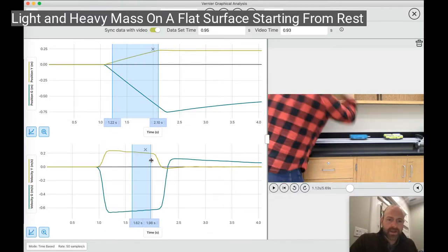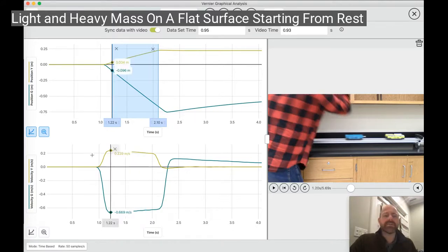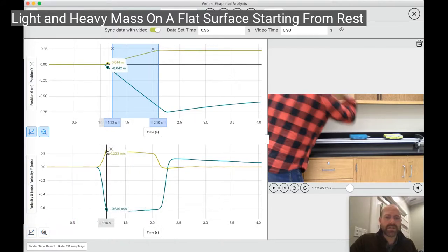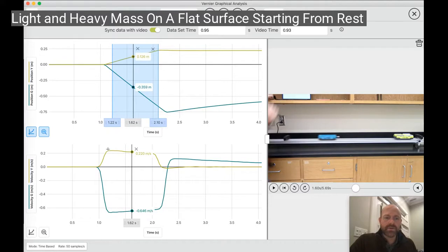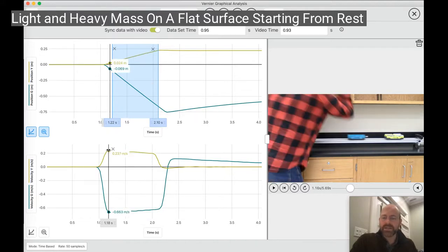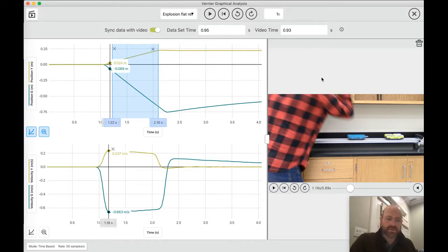In velocity, we see a similar thing. Obviously, they're slowing down a little bit because of some friction, but they start with 0 velocity. Then they jump to a big negative velocity for green because it's got a low mass, big velocity, and a small positive velocity for yellow.